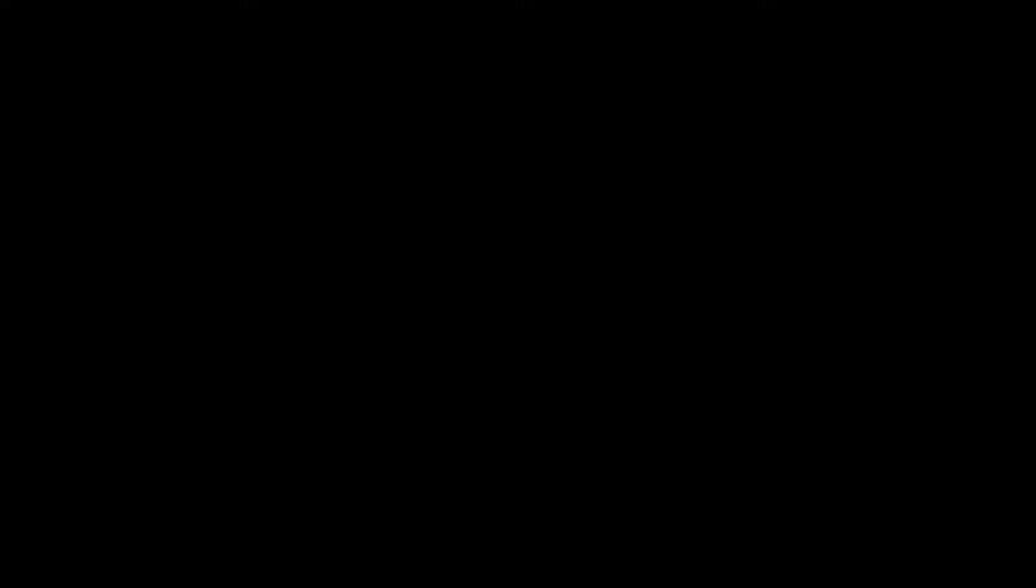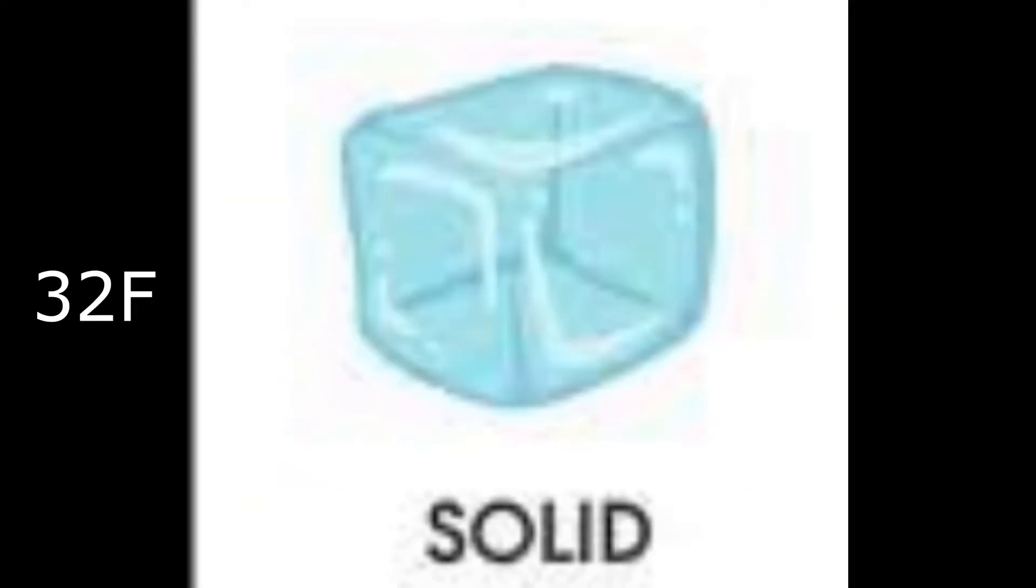Now solids are the coldest state of matter an object can be in. For example, water can be a solid at a temperature of 0 degrees Celsius. Some examples of solids are baseballs, my hand, or school.